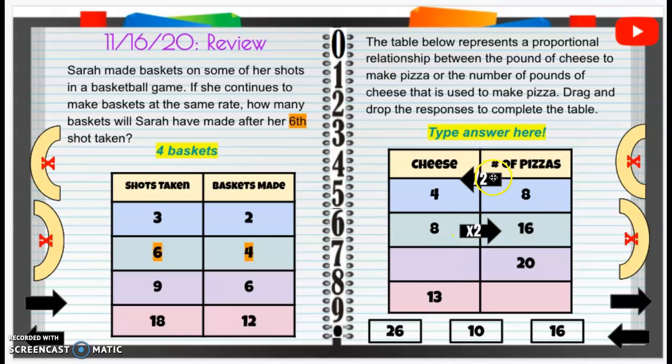All right, this one has the empty box for the cheese. So we start with our pizzas. So 20 divide by two is 10.